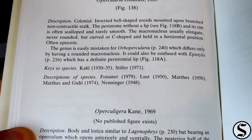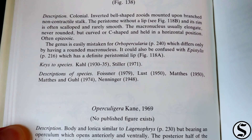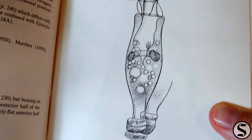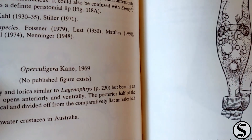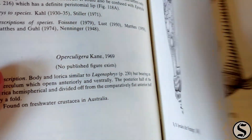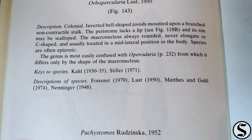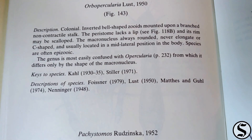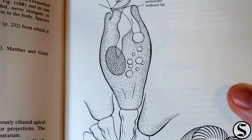And then there's a description. It tells you what it could easily be mistaken for — that'll be the orbopercularia on page 240. There's a nice little drawing of it. Having a look at the orbopercularia on page 240, we can see that it's pretty much the same except for the shape of the macronucleus.